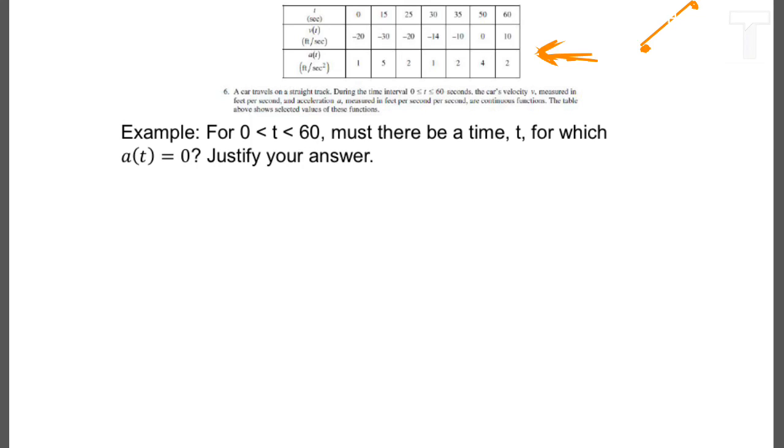So the trick to the mean value theorem is to be able to figure out an a and a b for which the average rate of change of the function you care about is equal to the derivative value that you care about. So here, we've been asked about the existence of an acceleration value. Acceleration is the derivative of velocity, so we actually want to try to apply the mean value theorem to the v function.